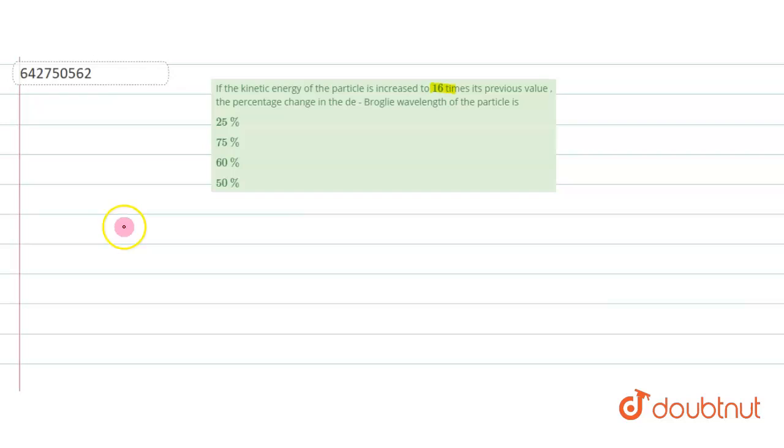the wavelength is equal to h divided by p. So here we can write p as m into v. Okay, so let's say initially you have your speed v and your wavelength λ, and according to your question,